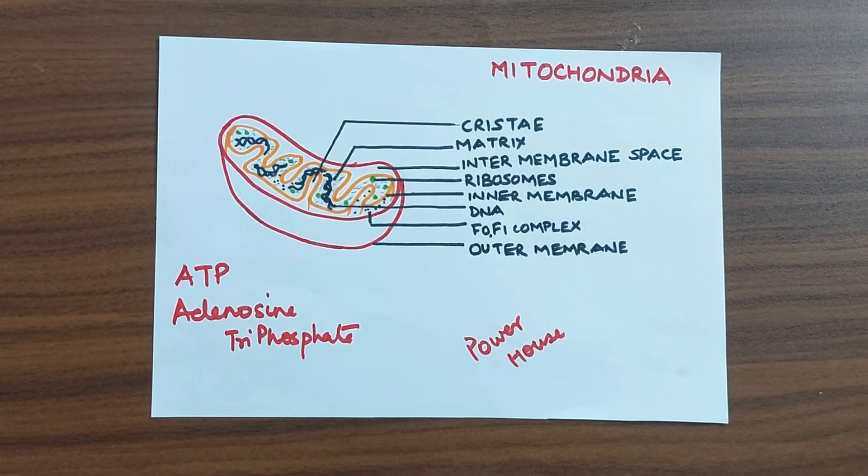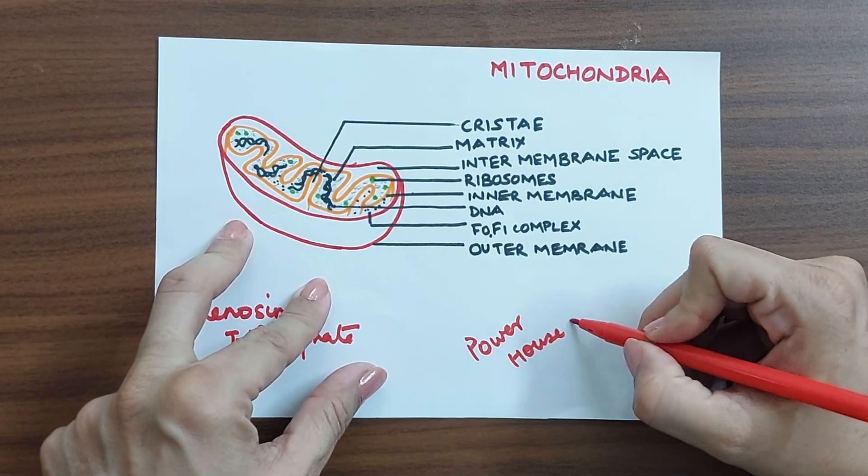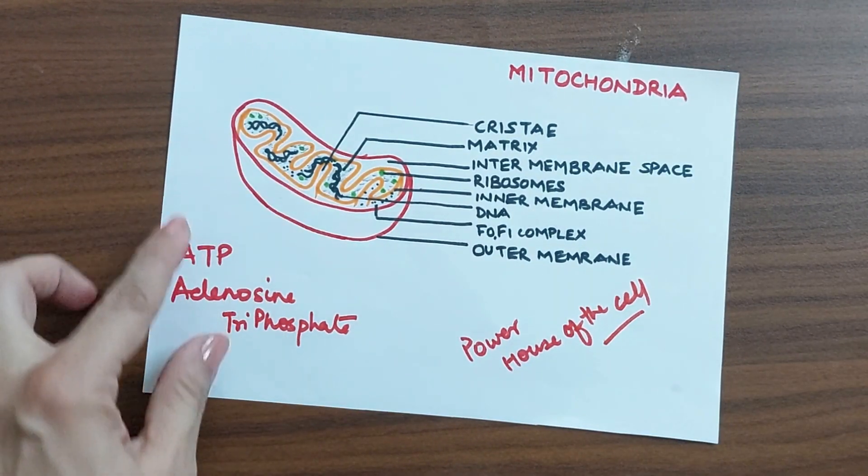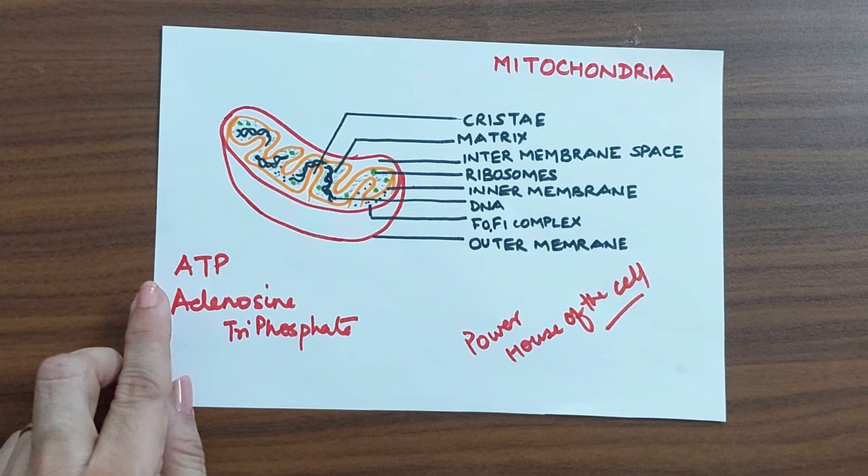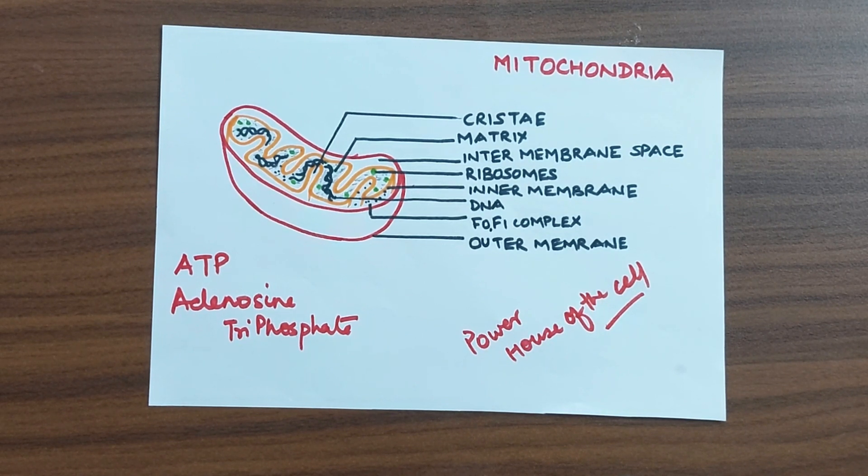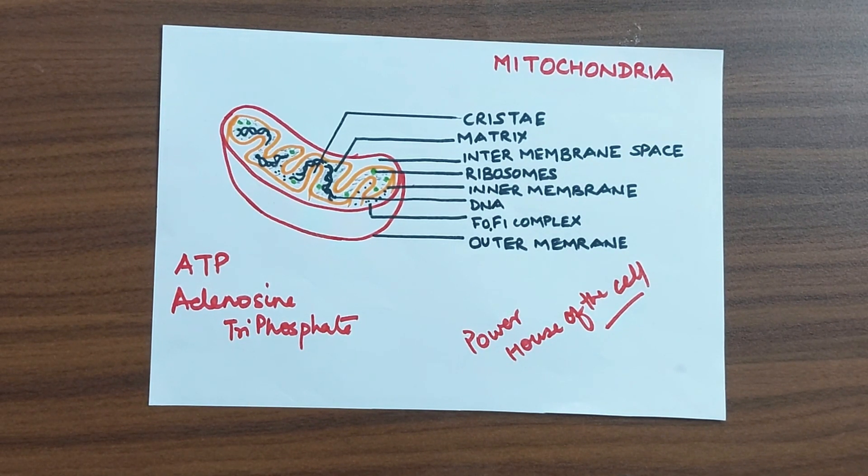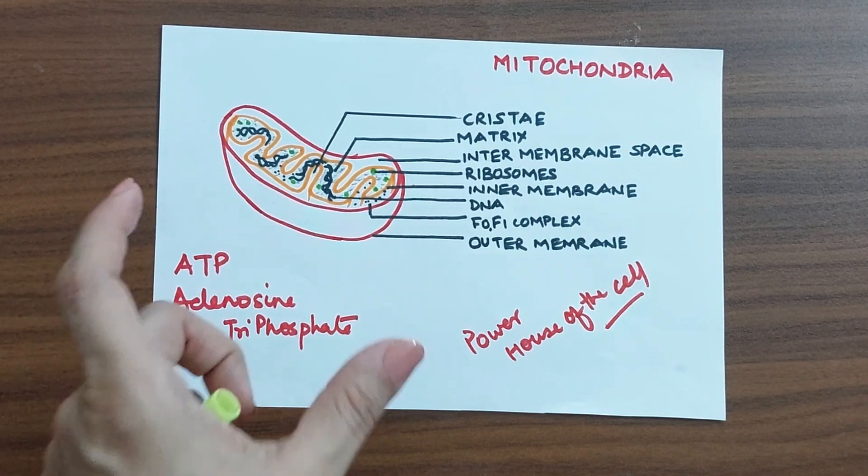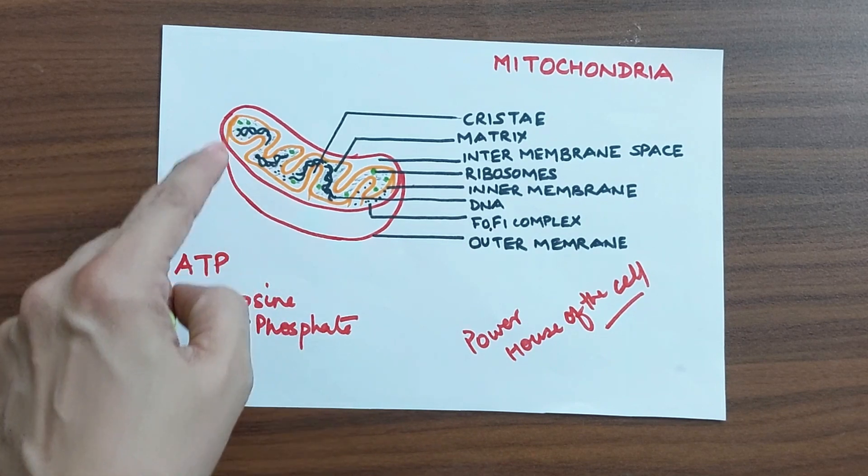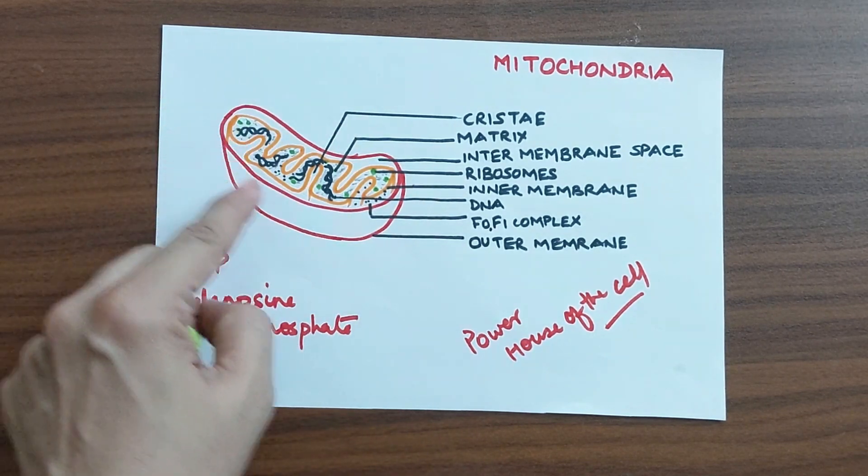Let us now look at another very interesting organelle called the mitochondria. Mitochondria is also known as the powerhouse of the cell and that is because inside mitochondria the energy is produced because mitochondria has sites for cell respiration. So let's see the structure first. So mitochondria are rod shaped organelles. They are also surrounded by double membrane.